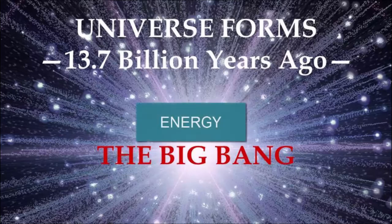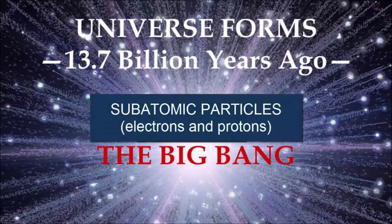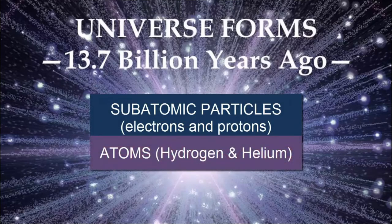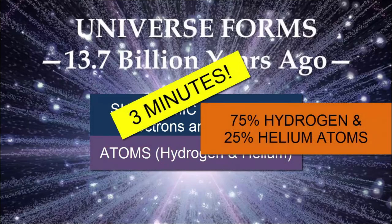In the first few seconds and minutes after the initial explosion, some of the energy transformed into subatomic particles like protons and electrons. The first atoms form, and by three minutes after the Big Bang, the universe contained by mass 75% hydrogen atoms, identified by having just one proton in the nucleus, and 25% helium atoms, identified as having just two protons in the nucleus.